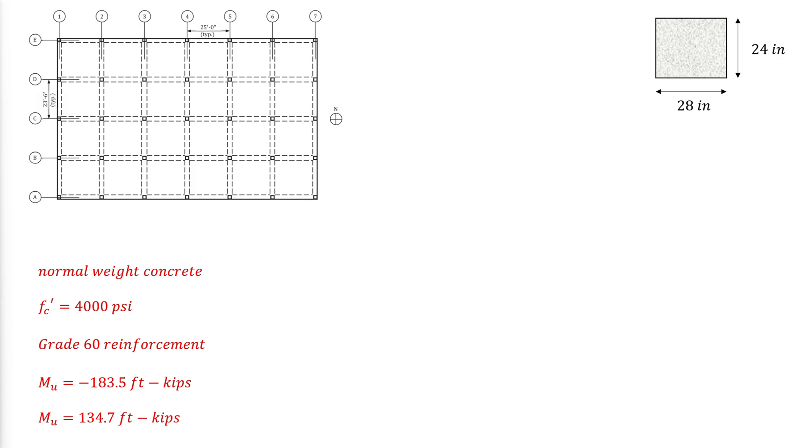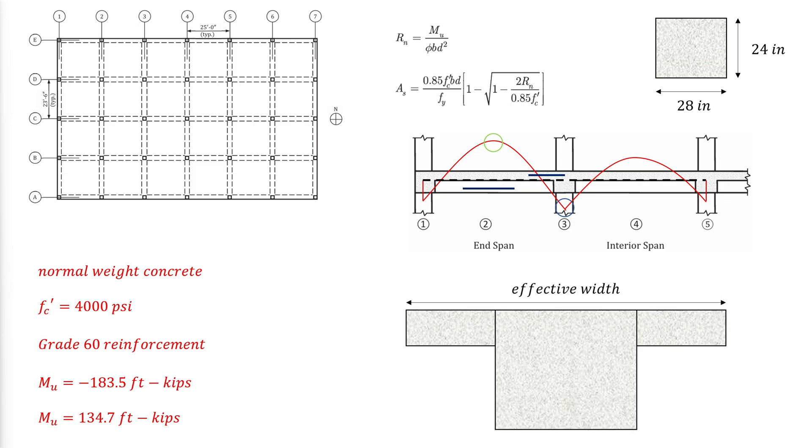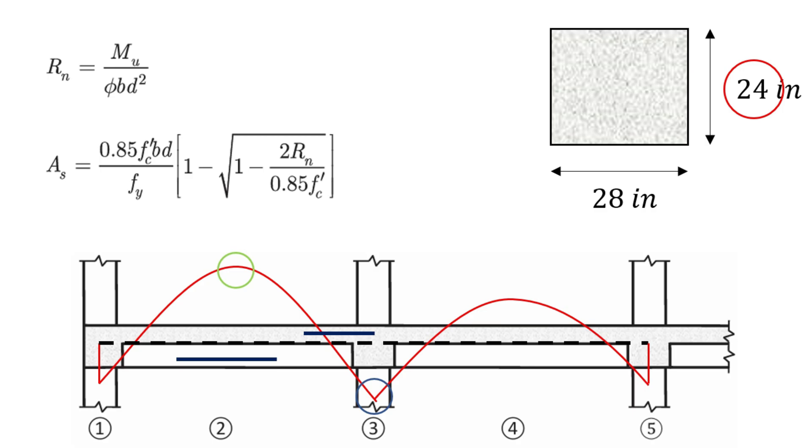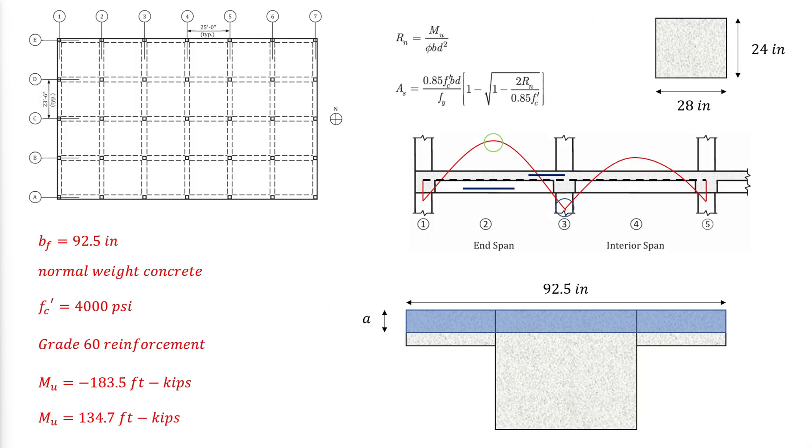The required flexural reinforcement area as per the last video is calculated as follows. The reinforcement will be required at the bottom for positive moments and at the top for negative moments. When compression is at the top, an effective width including the beam and a portion of the slab will contribute in the compression block. The effective width is the least of the following, where H is the height of the beam, 24 inches, SW is the face-to-face perpendicular span width, and LN is the face-to-face beam length. Because the compression block depth A does not exceed the slab thickness, the above equations for determining the reinforcement area can be used at positive moment sections while using BF as B.